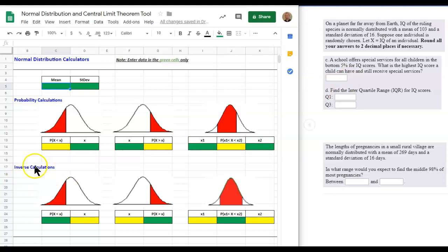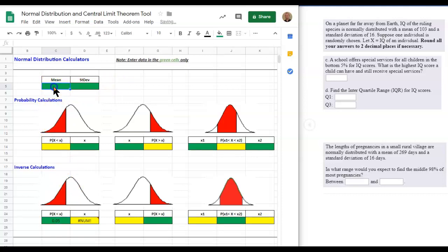We're going the opposite direction. So we're inputting, remember, we're entering data in the green cells only. We're entering in the probability, and we're going to find the value. It says the bottom 5%, so the area to the left is 5%. So we're going to use this tool right here. Area to the left is shaded, and we're going to put in 0.05. But we also first want to enter in the mean. We would enter in the mean of 103 and standard deviation of 16.